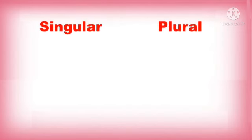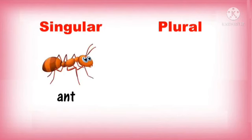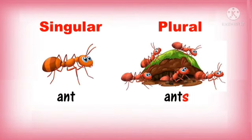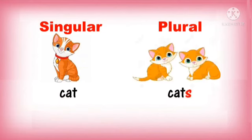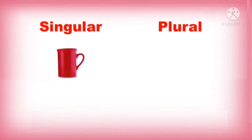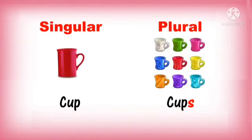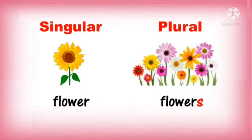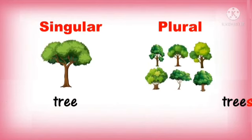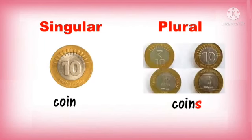Singular, plural. Ant, ants. S is added at the end of the singular noun to make them plural. Cat, cats. Cup, cups. Flower, flowers. Tree, trees. Coin, coins.